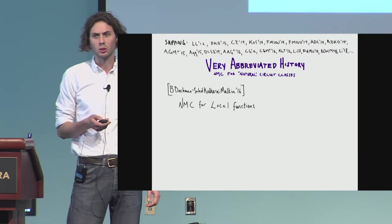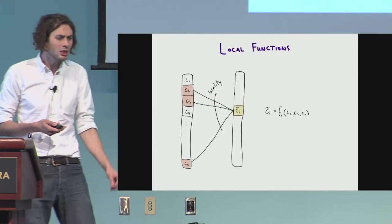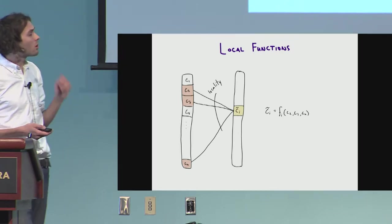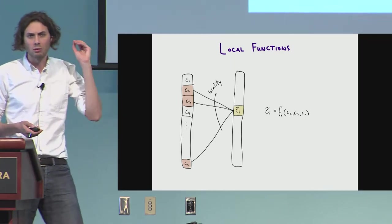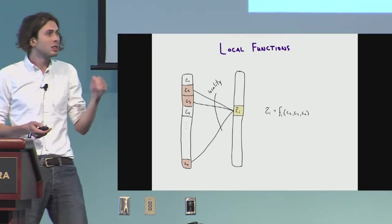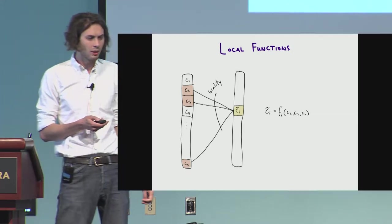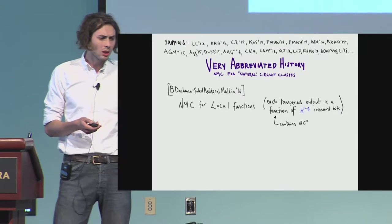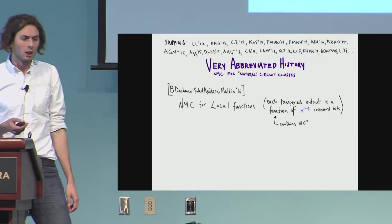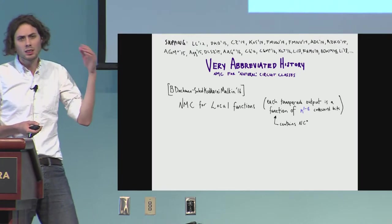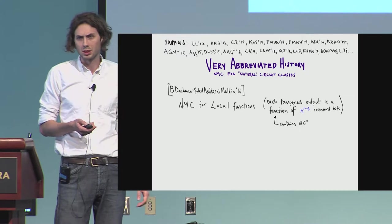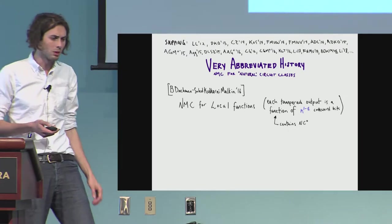we constructed a non-malleable code for local functions. A local function is a function where each output only depends on a few input bits. You can write the output bit as a function of, in this case, at most three inputs. And so we constructed these codes for local functions where the locality parameter is n to the one minus epsilon.